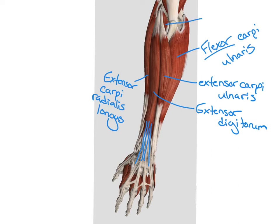The small muscle that we can see on the posterior side just lateral to the olecranon is called the anconeus, which contributes to the very end range of extension. Here we can see our tricep tendon and then deep to that we can see our brachialis.